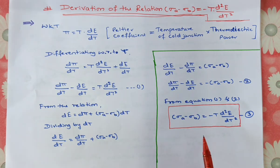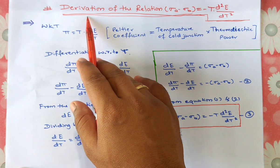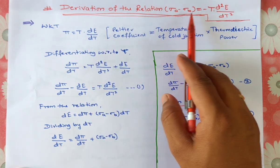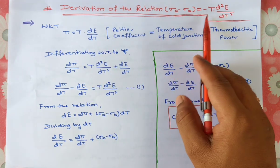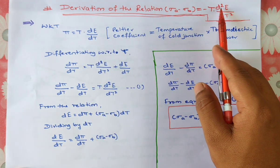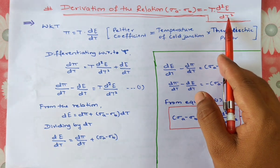Hello dear students, welcome back. Now we are going to discuss about the derivation of the relation sigma a minus sigma b is equal to minus t d square e divided by dt square.